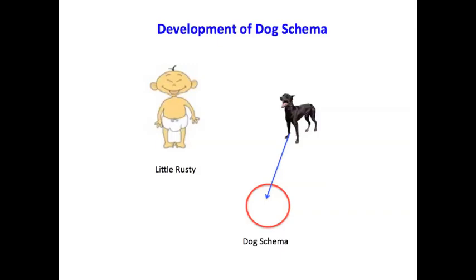I want you to think about how nice this is for Little Rusty. He has a dog schema, he meets a dog, everything's categorized, it falls right into place, everything's going good. Little Rusty's having fun. Any of you with your children or ever see children who go out and they see a dog and everything's a dog and they're just tickled to death.